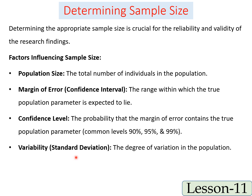Another factor is the variability or standard deviation of the population — the degree of variation. If there is a higher degree of variation, we require a higher sample size. If the population is homogeneous or there is less variability, we require a smaller sample size. If you want to know more about sample size determination with examples, go to lesson 11 — link in the description box below.